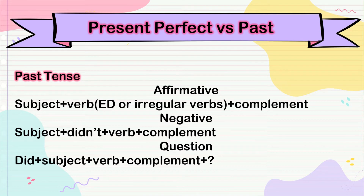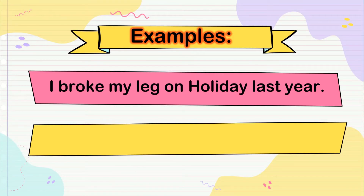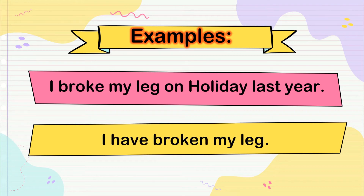So let's see some examples. 'I broke my leg on holiday last year.' This is a past tense sentence because you are using 'last year' — that is an expression in the past. But if you say 'I have broken my leg,' that is an action that started in the past and continues until now.